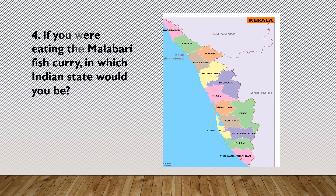Now, answer me the question. If you were eating Malabari fish curry, in which Indian state would you be? That is Kerala. So, this is a map of Kerala state. Do you know who is the chief minister of Kerala? Pinarayi Vijayan. The capital of Kerala is Thiruvananthapuram, which is the wealthiest place of worship in the world. You may be knowing the Padmanabhaswamy temple — Sri Padmanabhaswamy temple — which is the richest temple.